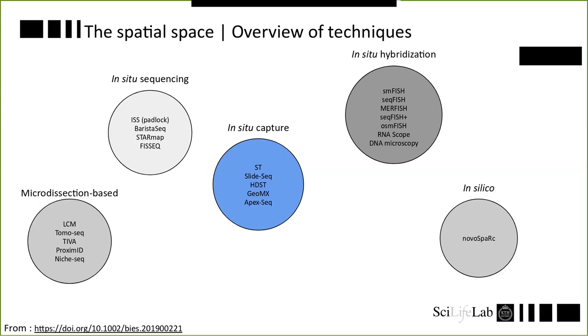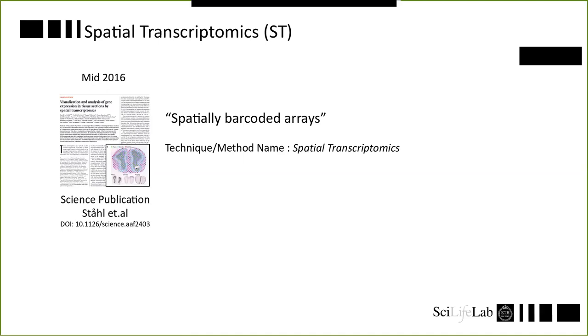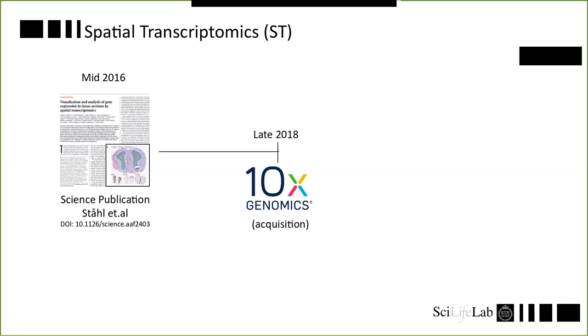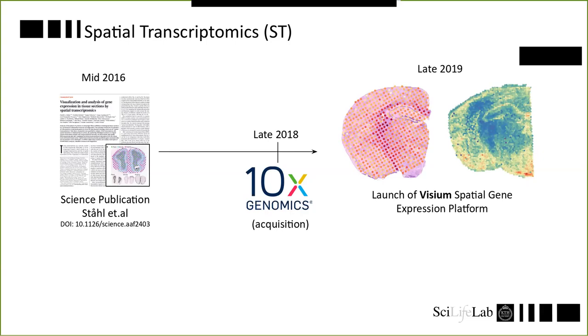For today, we'll be focusing on the in-situ capture methods and more specifically the ST method. That stands for spatial transcriptomics. This idea of spatially barcoded arrays was introduced to the scientific world in mid-2016. This paper was published in July, a Science publication by Ståhl et al. They made what they thought was a good move to name this spatial transcriptomics technique. Today it causes quite a lot of confusion when you say you work with spatial transcriptomics because that's more or less the whole field. However, in late 2018, 10X acquired the IP rights to this technology, and that resulted in the launch of the Visium Spatial Gene Expression platform.